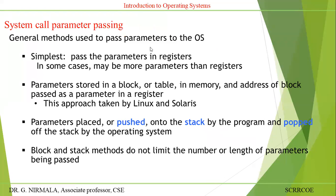System call parameter passing: if you want to pass parameters through the system call, you have various methods. The simplest method is to pass the parameters by means of registers — AH-AL, BH-BL, CH-CL. Some general purpose registers are there, and with the help of those general purpose registers you pass the parameters.